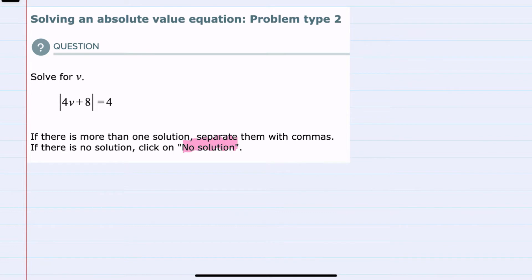However, if the absolute value would have been equal to a negative, say a negative 4, we could have stopped here and said there's no solution because the absolute value could not be negative. Since that's not the case, I'm going to move forward by removing the absolute value. When we have an absolute value equals a positive, there are two possibilities.